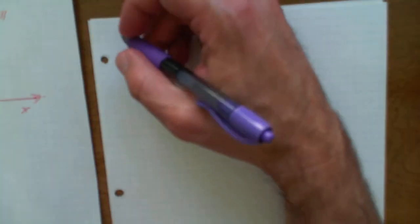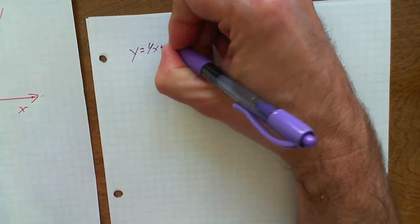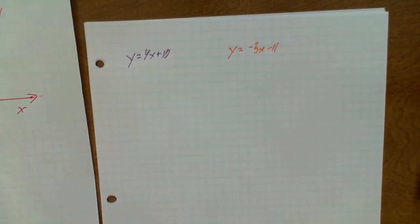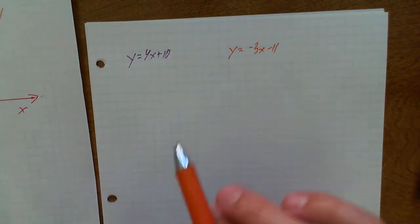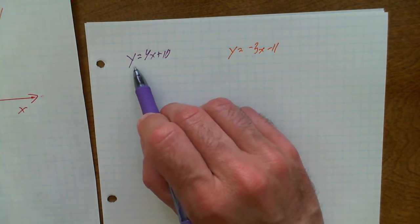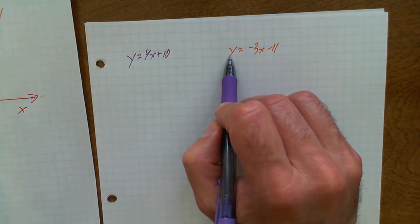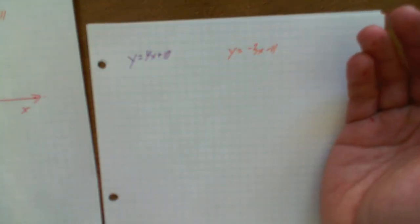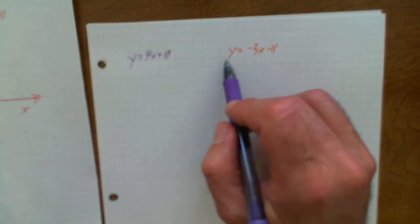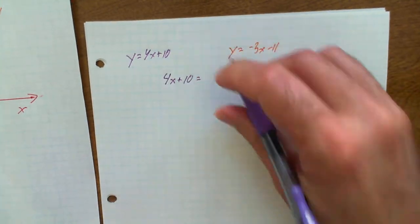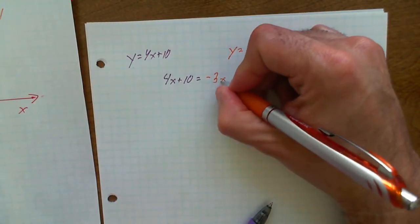This is the way I want you to do it. y equals 4x plus 10, and the other one is y equals negative 3x minus 11. Where do these two intersect? We have to find out where they intersect without graphing, using substitution. Because these are both equal to y, you can just set them equal to each other. Ultimately it's going to look like this: 4x plus 10 equals negative 3x minus 11.